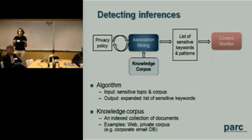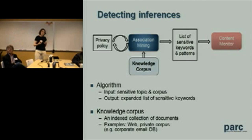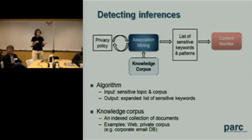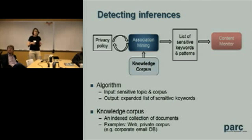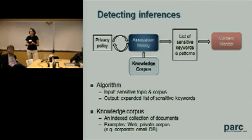In the more general DLP — data loss prevention — setting, we take as input a privacy policy, which is probably just sensitive topics you want to protect, like Bin Laden in the first example or Greece in the other. We also require a knowledge corpus, which was the web in those examples but could be an internal corpus. The algorithm uses association mining to output keywords closely associated with those sensitive topics, which can then help program your content monitor to flag sensitive content on the network.